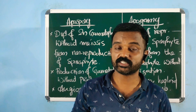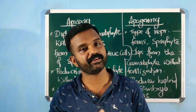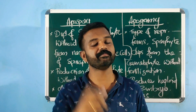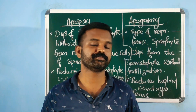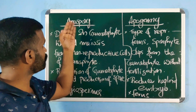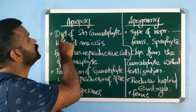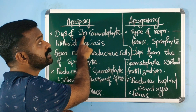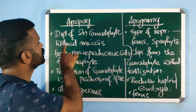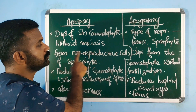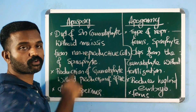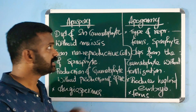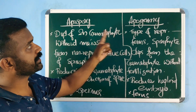Welcome to the new episode of Smart Locus. In this episode we will see the difference between the two terminologies: apogamy and apospory. Apospory is a form of apomixis — the development of a diploid gametophyte without meiosis from non-reproductive cells of the sporophyte.